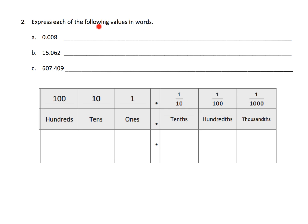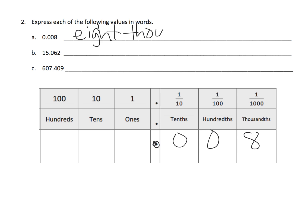Now it says express each of the following values in words. I allow my students to begin by putting the value in the chart. So 0.008 — we have no tenths, no hundredths — so we have eight thousandths. We would write: eight thousandths, with a T-H-S at the end.